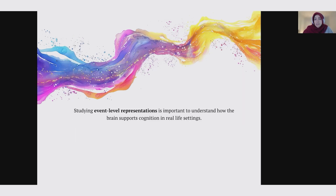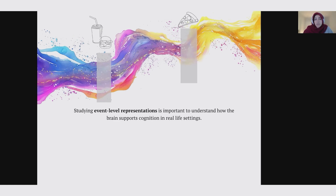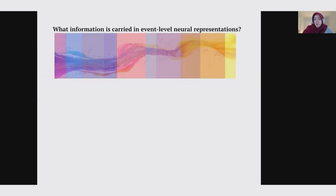To better understand how the brain supports cognition in real-life settings, event-level representations might be a key. By event-level representation, I mean neural representations that capture the entire event as a whole rather than moment-by-moment perceptual dynamics. This approach may help us overcome some of the idiosyncrasies of naturalistic paradigms. For example, two events of having a meal during the day may have high-level similarities in spite of differences in the details. So in this talk, I focus on the question of what information is carried in event-level neural representations.